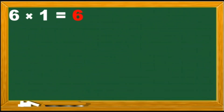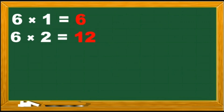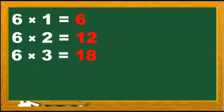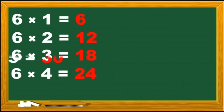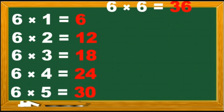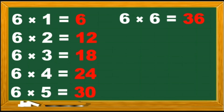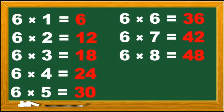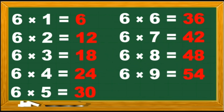6 1s are 6, 6 2s are 12, 6 3s are 18, 6 4s are 24, 6 5s are 30, 6 6s are 36, 6 7s are 42, 6 8s are 48, 6 9s are 54, and 6 10s are 60.